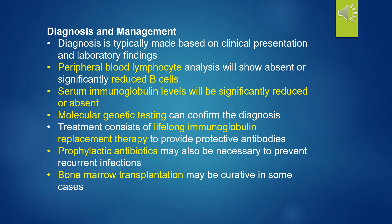Primary follicles and germinal centers are absent, and live vaccines are contraindicated. Diagnosis involves peripheral blood lymphocyte analysis showing absent or reduced B-cells, confirmed by serum immunoglobulin levels and molecular genetic testing. Treatment consists of lifelong immunoglobulin replacement therapy, prophylactic antibiotics, and bone marrow transplantation may be curative in some cases.